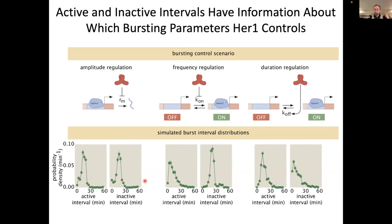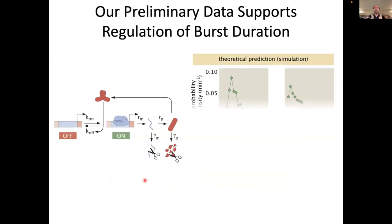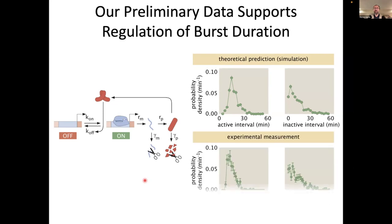So now what we're doing is trying to compare these theoretical predictions to the data. These are early days, so take all of this with a grain of salt. But the prediction of the distributions, if the repressor controls the burst duration, and this is what we measure — at least qualitatively, it looks like out of the three scenarios, the repressor is controlling burst duration.